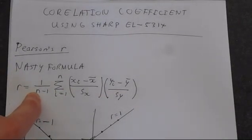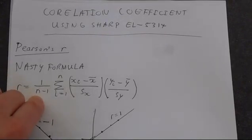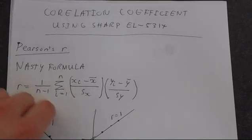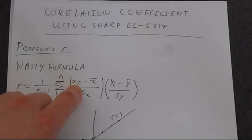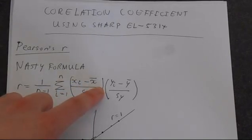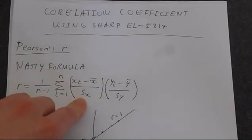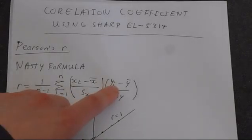So N is the number in your sample. That's an X point subtracted from the mean of the X values over the standard deviation of the X values.